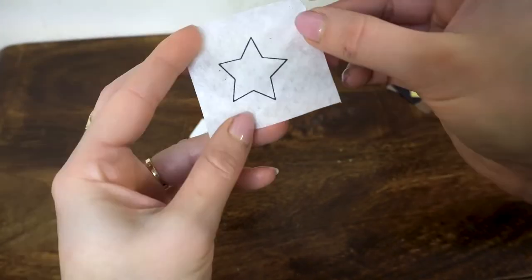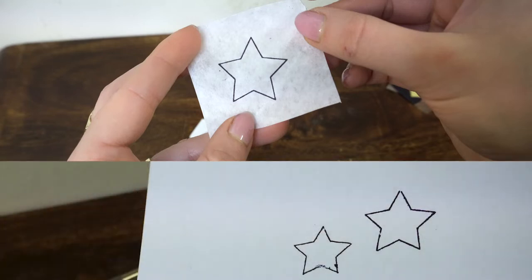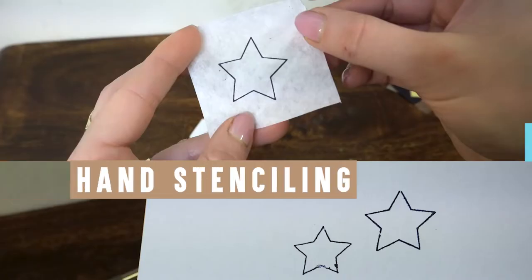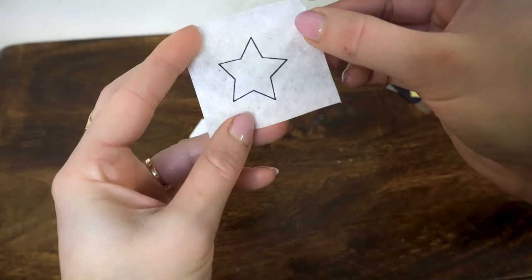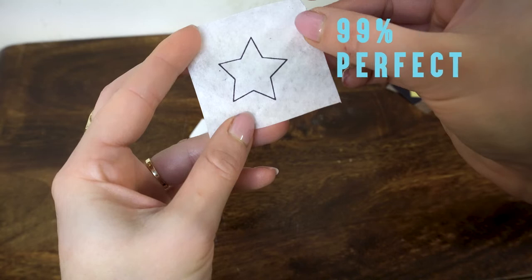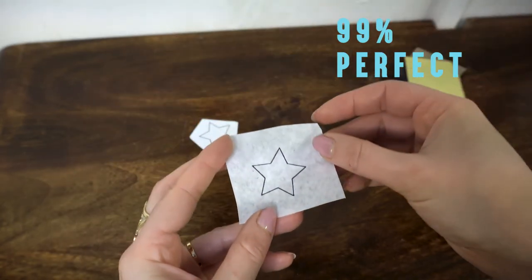As you can see, I'm putting next to each other the hand-drawn stencil stars that I've done before and here is the thermal copier stencil I've used. See the difference, how much nicer, finer, delicate, and really precise the stencil made with thermal copier is compared to hand stenciling. The thermal copier one is nearly 99% perfect.